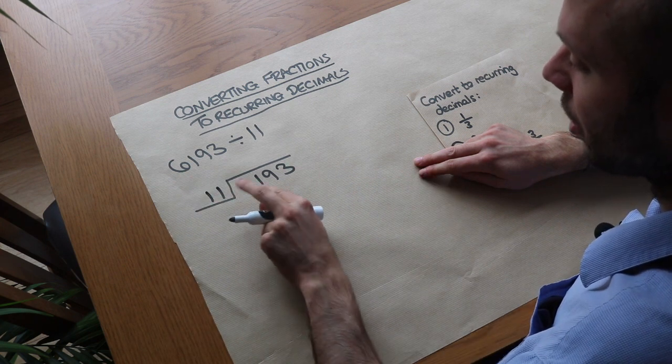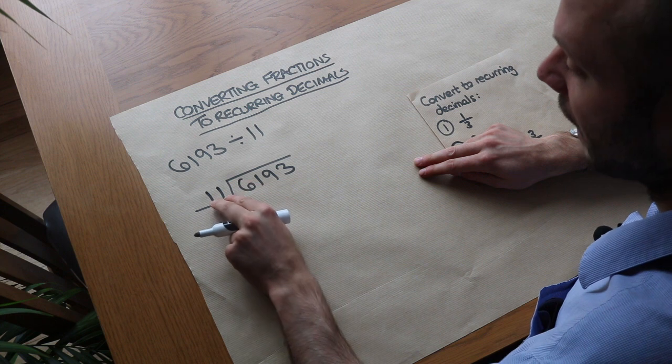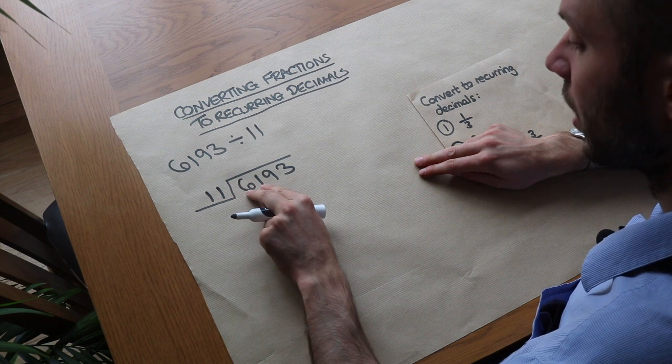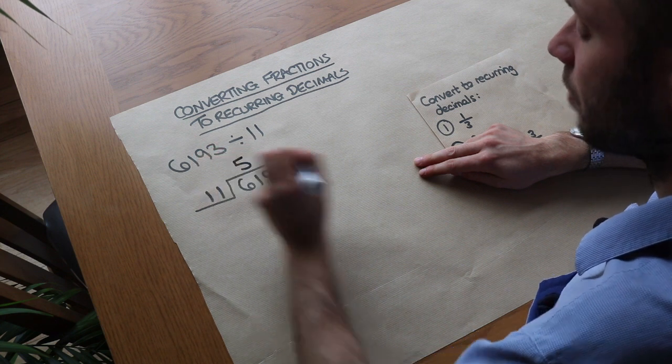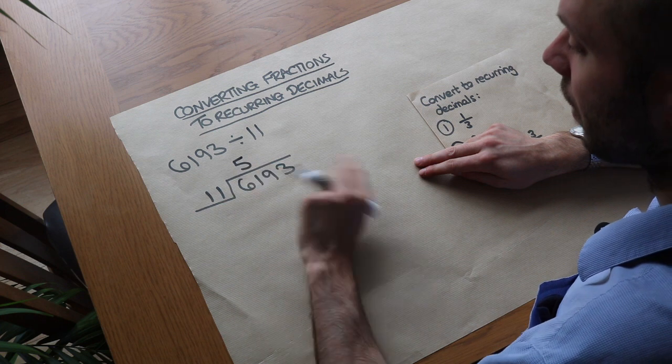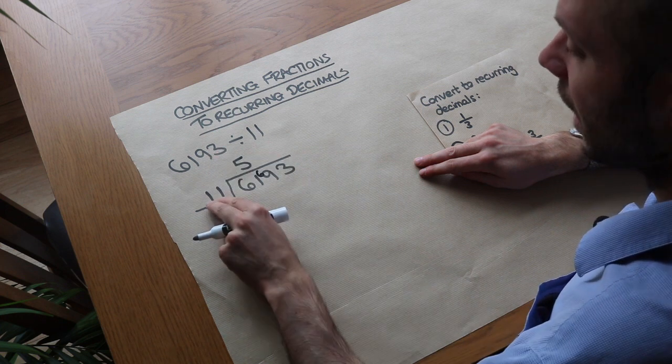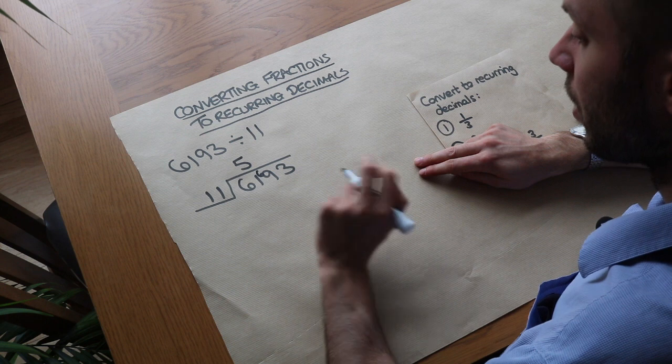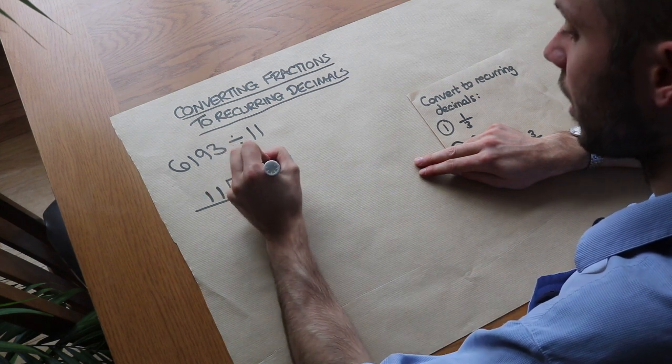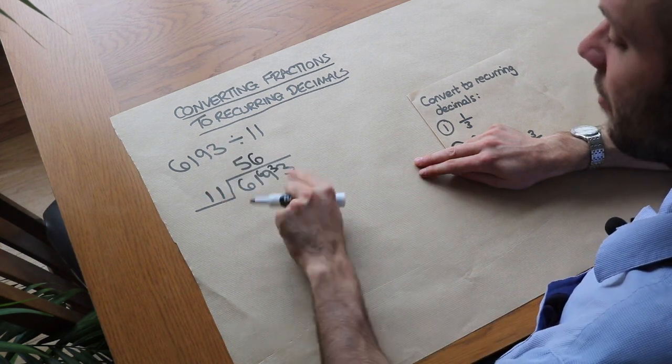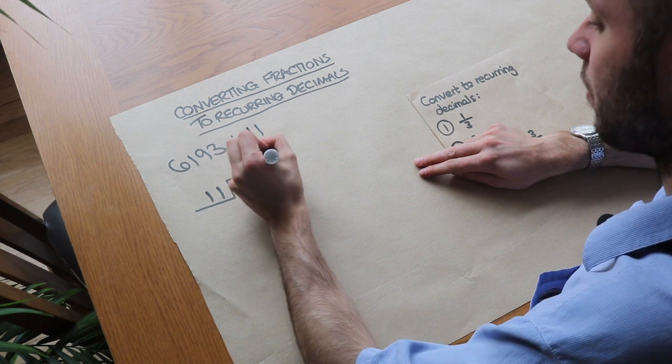So we say how many times does 11 go into 6? We can't do it. But how many times does 11 go into 61? It goes in 5 times. That gets us up to 55 and we have a remainder of 6. How many times does 11 go into 69? Well it goes in 6 times, remainder 3. And then how many times does 11 go into 33? It goes in 3 times.